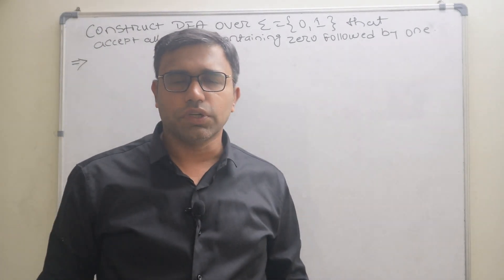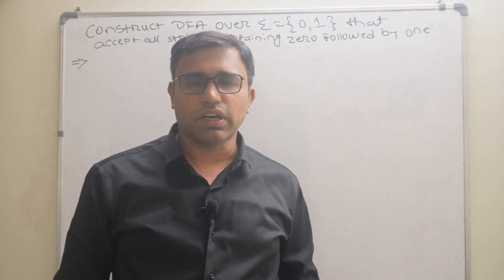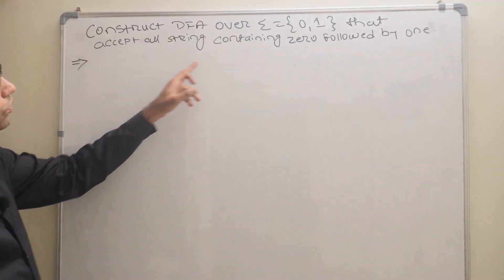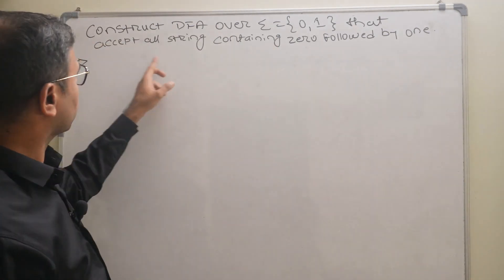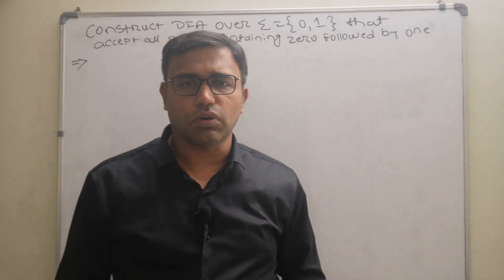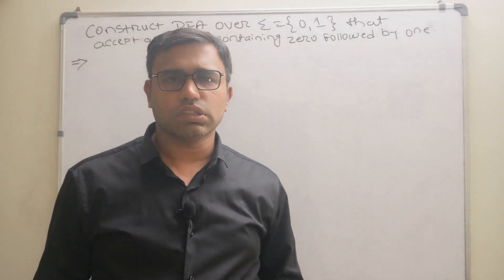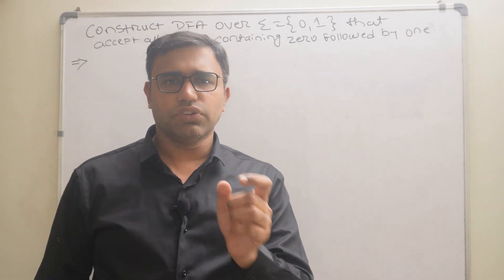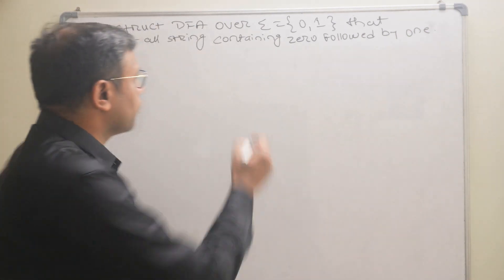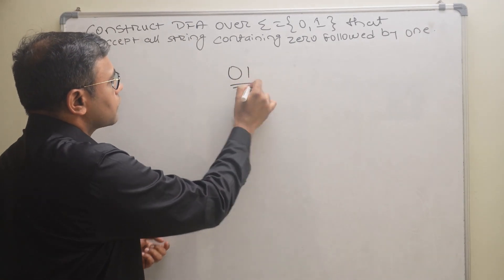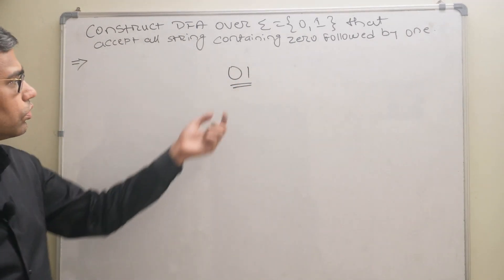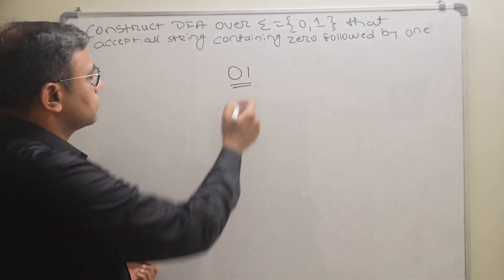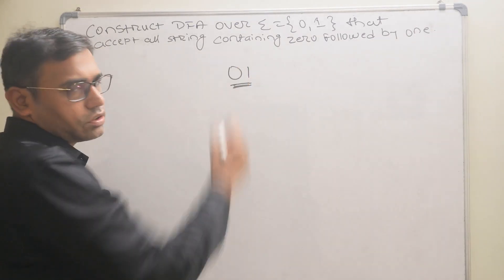Hello friends, the topic of this video is construction of deterministic finite automata. The question is: construct a DFA over input symbols zero and one that accepts all strings where every zero is followed by one. This means we have to construct a DFA which accepts strings containing the substring zero-one.